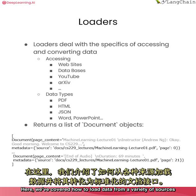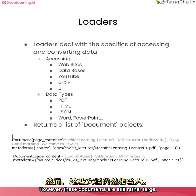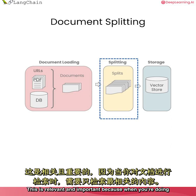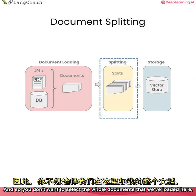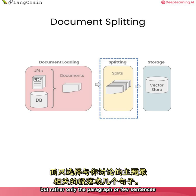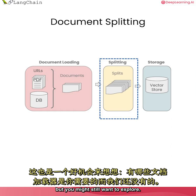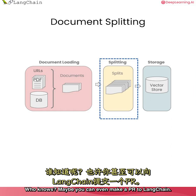That's it for document loading. We've covered how to load data from a variety of sources and get it into a standardized document interface. However, these documents are still rather large, so in the next section we're going to go over how to split them up into smaller chunks. This is relevant and important because when you're doing retrieval augmented generation, you need to retrieve only the pieces of content that are most relevant — not the whole documents, but rather only the paragraph or few sentences most topical to what you're talking about. This is also a great opportunity to think about what sources of data we don't currently have loaders for, but you might still want to explore. Who knows — maybe you can even make a PR to Langchain.